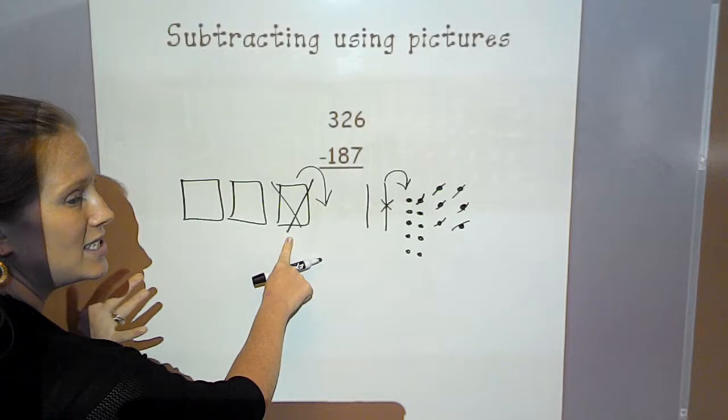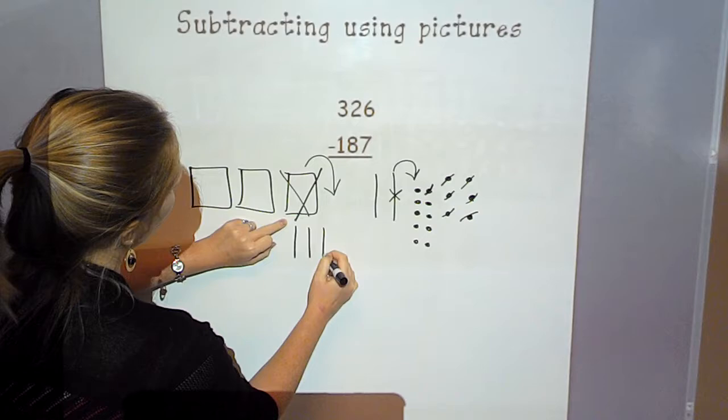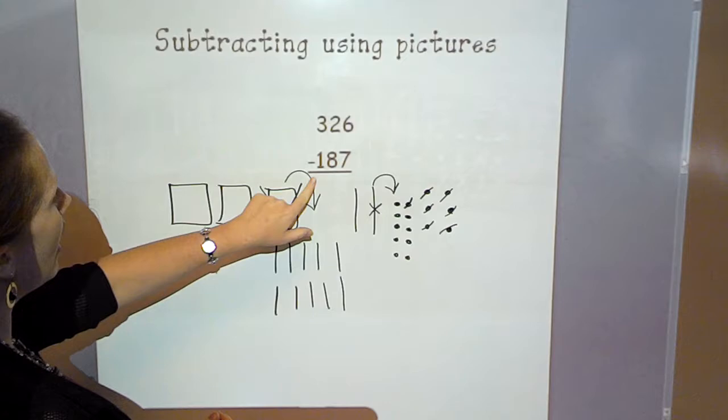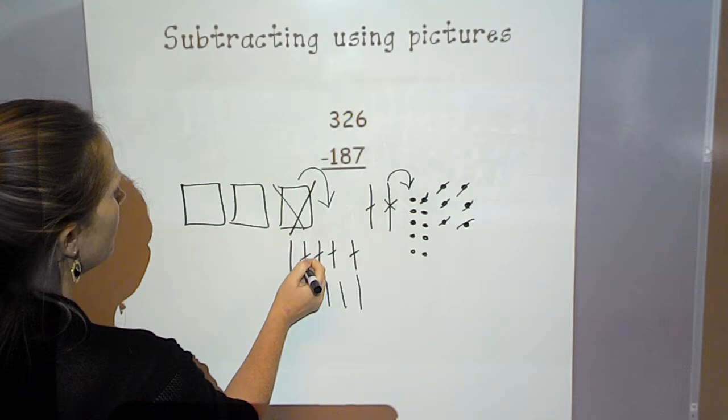I'm breaking it apart into 1, 2, 3, 4, 5, 6, 7, 8, 9, 10 tens. So now I can subtract my 8 tens. 1, 2, 3, 4, 5, 6, 7, 8.